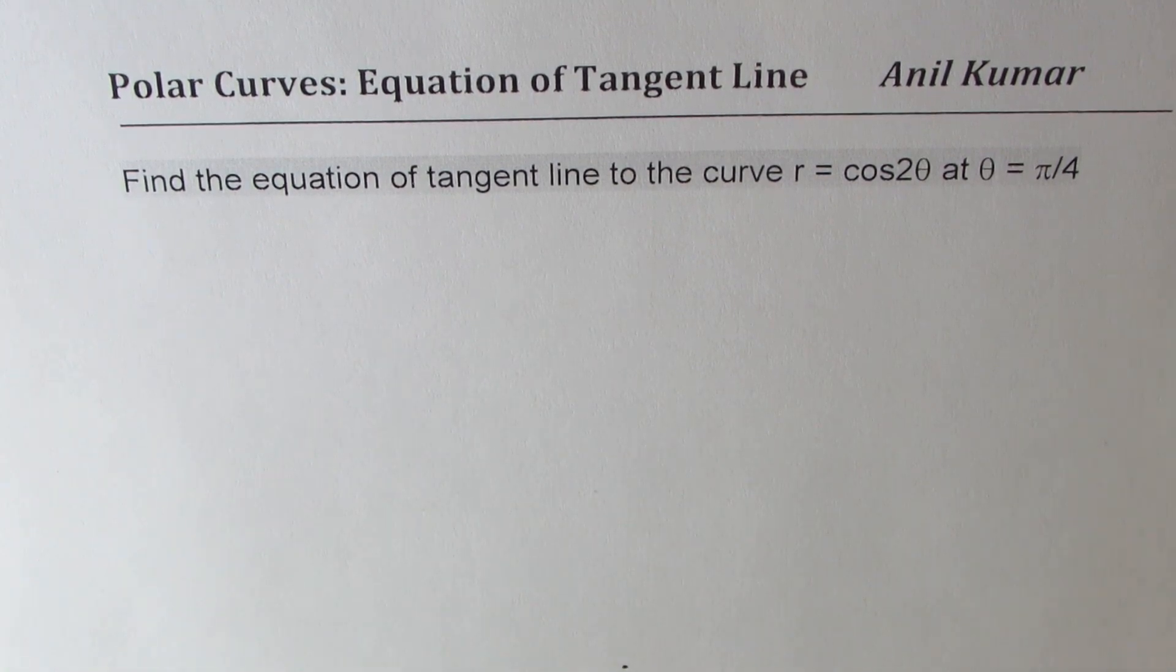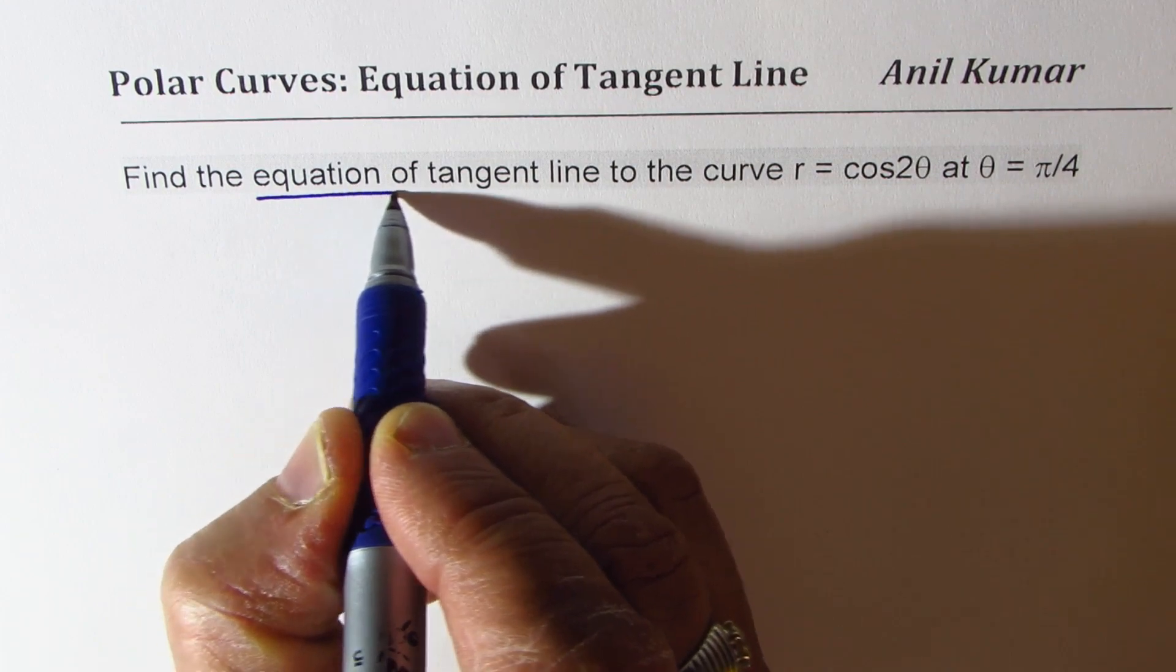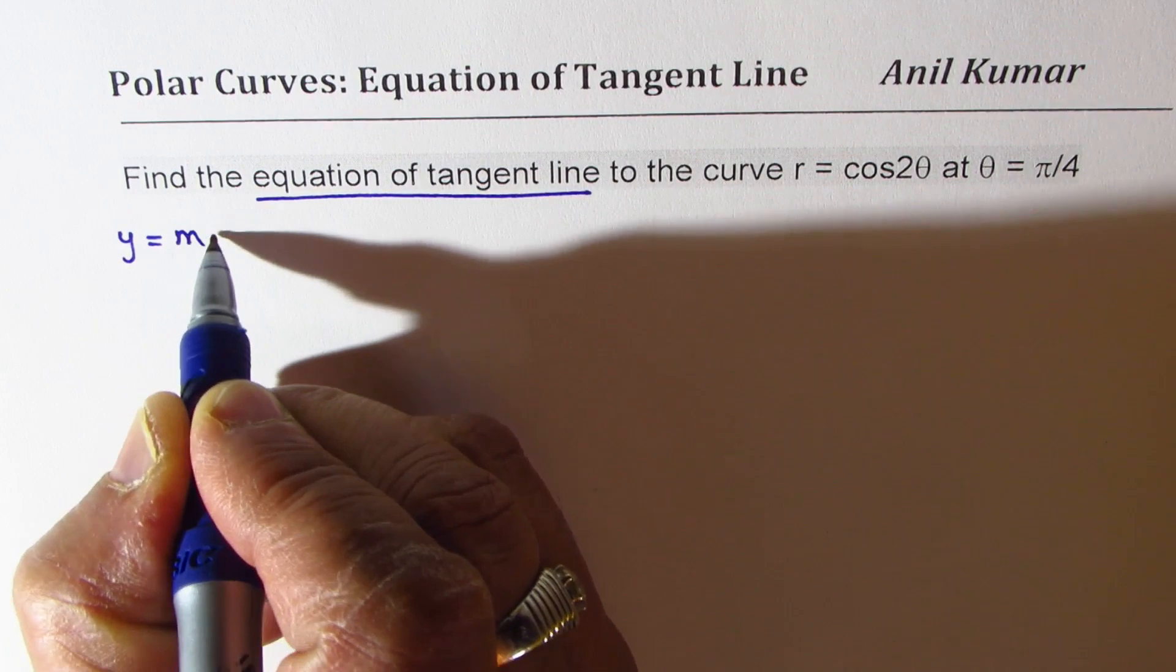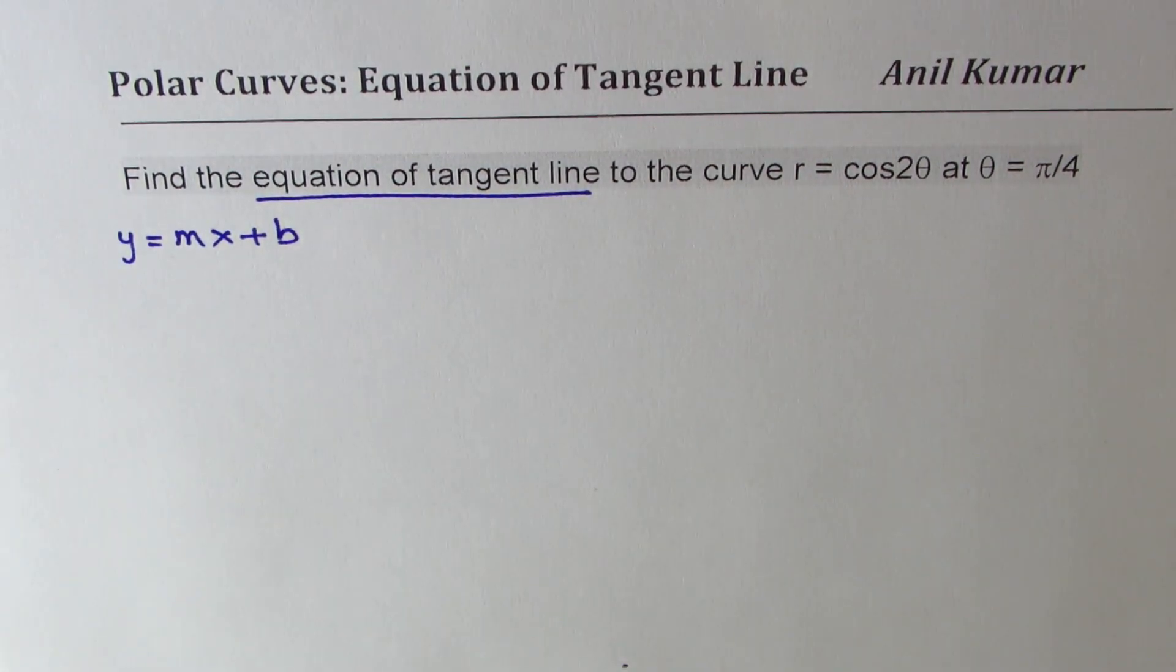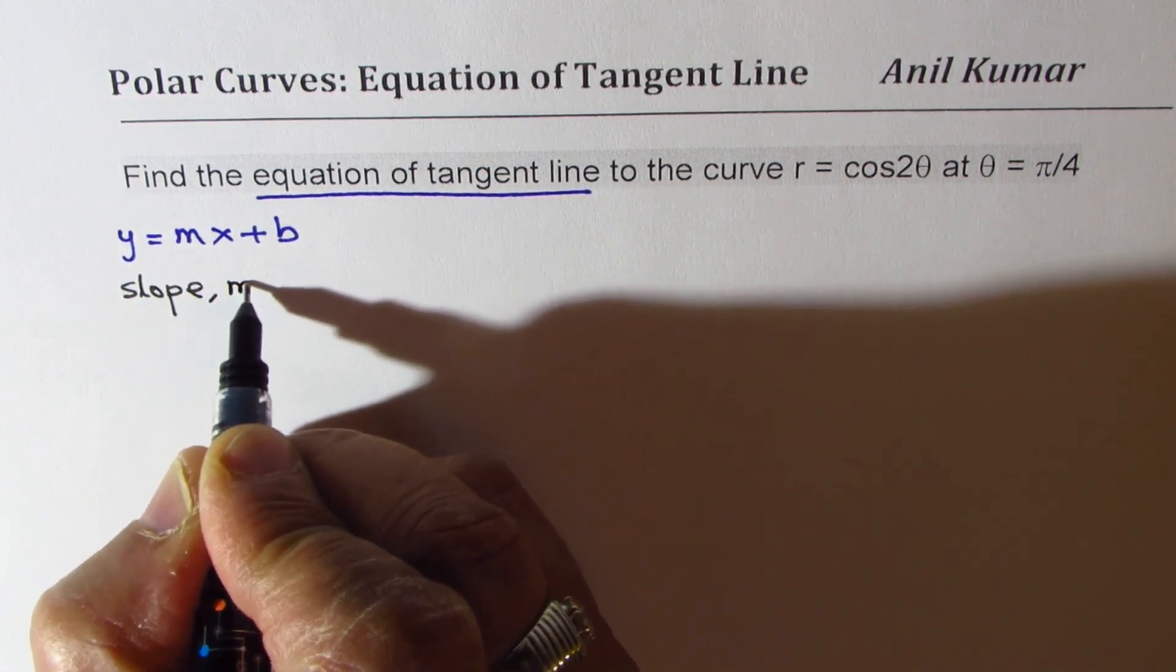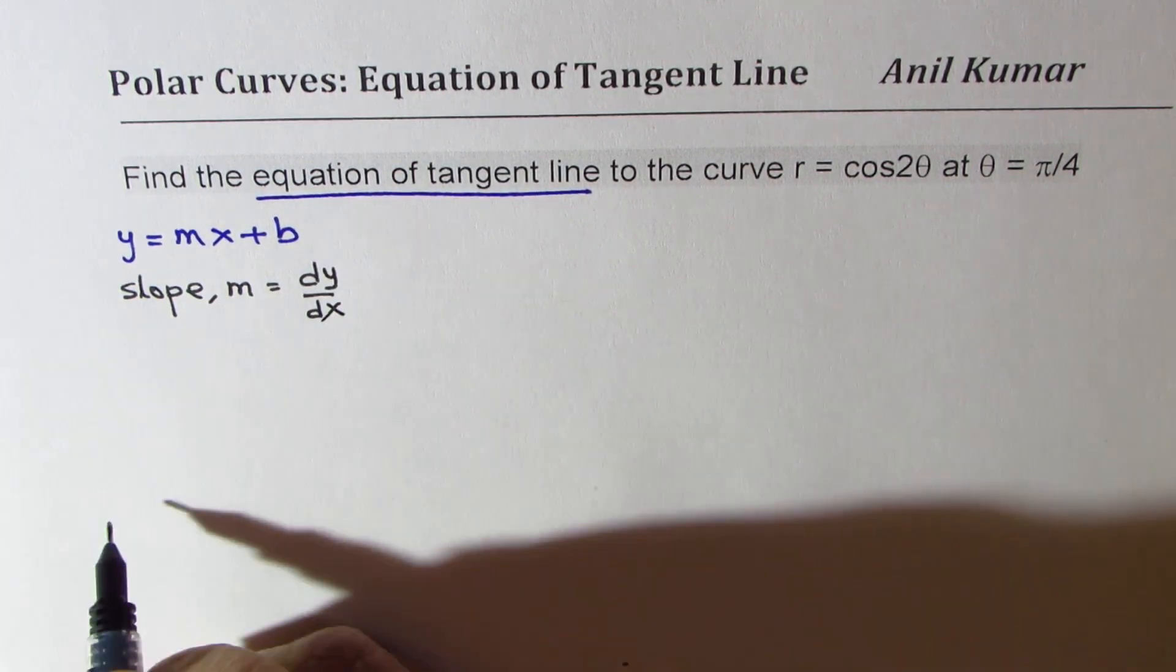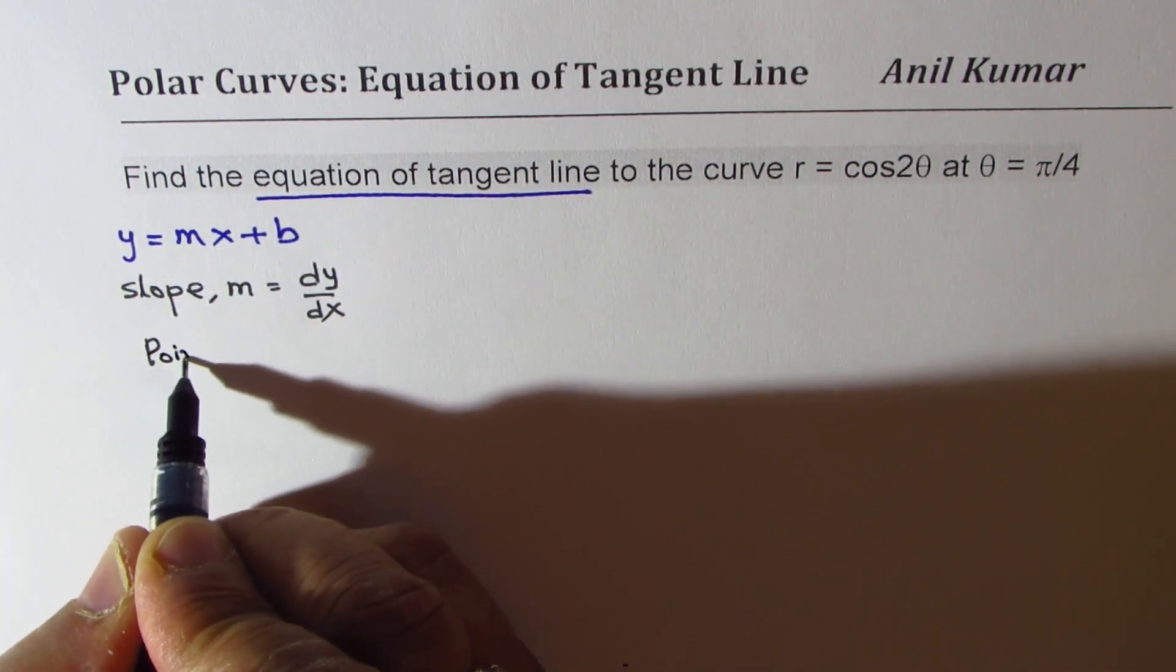Whenever we say equation of tangent line, it means we are looking for something like y equals mx plus b. So that is what we are looking for. We need to find slope m, which is dy dx, and we also need to find the point.